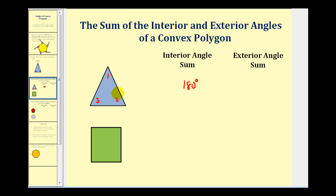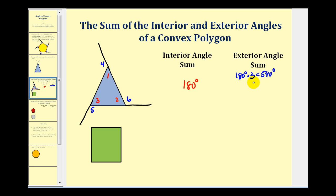Now let's label the exterior angles by extending each side. The exterior angles would be angle four, five, and six. The sum of the interior and exterior angles would be 180 degrees times three, since angles one and four, three and five, and two and six form linear pairs — giving us 540 degrees. Subtracting the sum of the interior angles (180 degrees) gives us the sum of the exterior angles: 360 degrees.